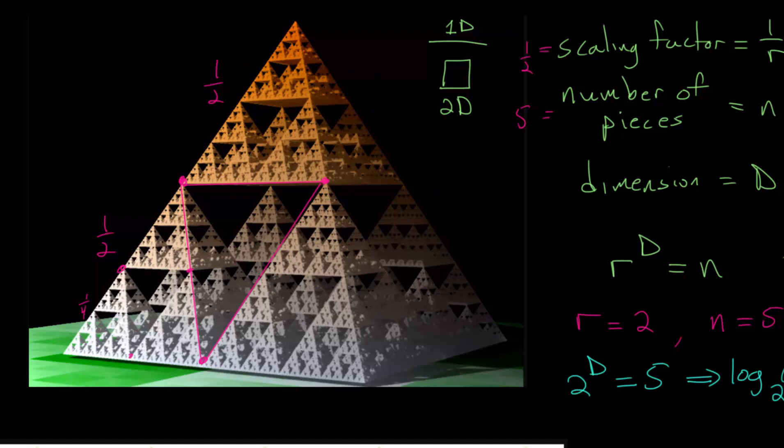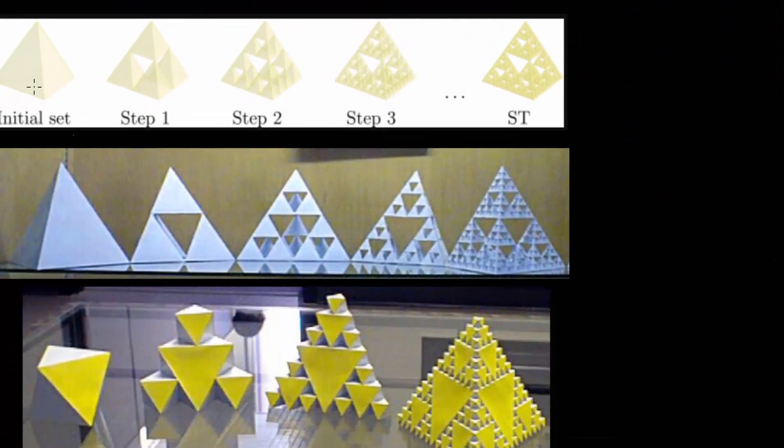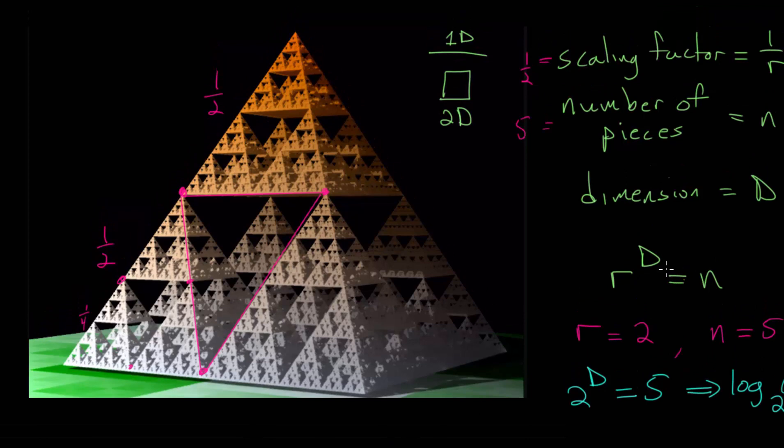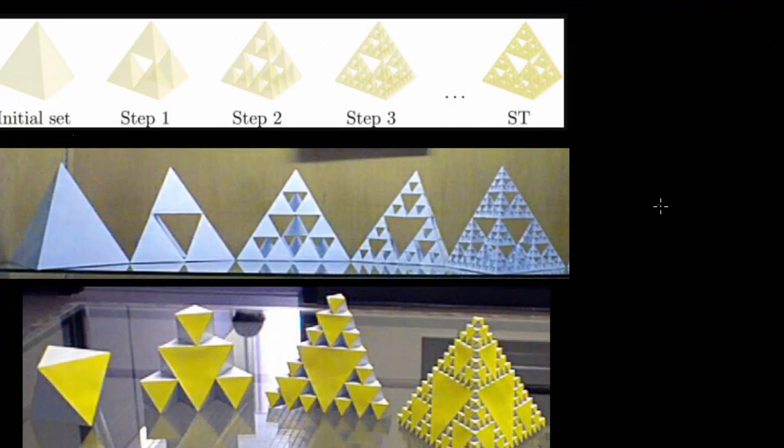Now if we look at the Sierpinski pyramid where it's a triangular pyramid or a tetrahedron, also known as the Sierpinski tetrahedron, then the equation, we will still use this same equation, r to the d equals n, but the equation will simplify so that we actually don't need to use logarithms. We can think it through because the answer will be a whole number.